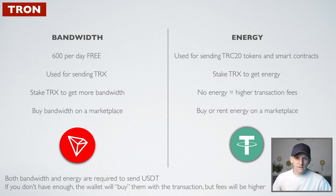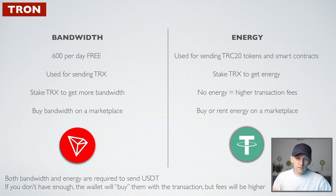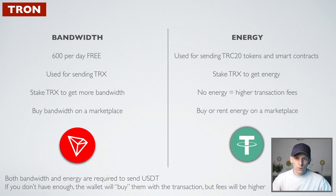These are basically ways to pay transaction fees. Bandwidth is what we use to send the layer one coin around. If you have TRX in your wallet, you can send it to another wallet on the Tron blockchain or to an exchange. That's a TRX transaction from your wallet — you're sending it out somewhere else — and you can use bandwidth to pay for that.